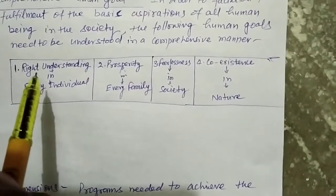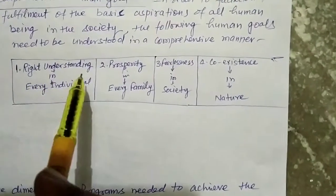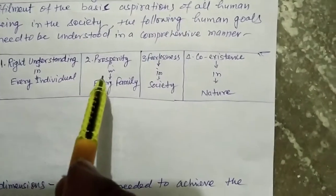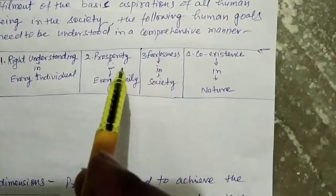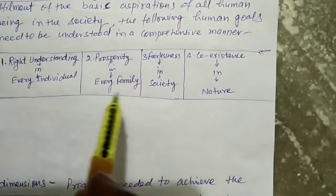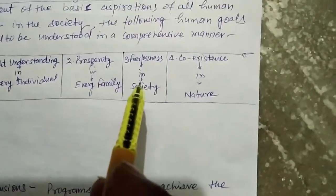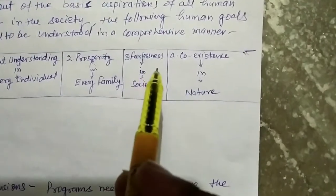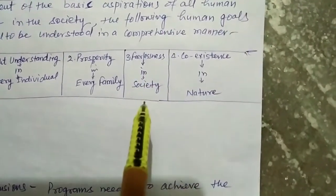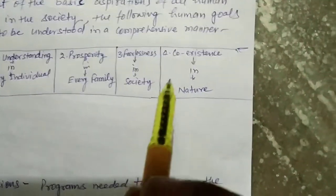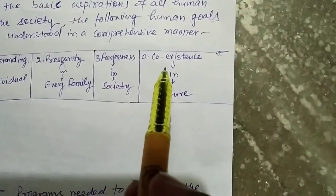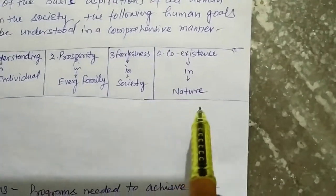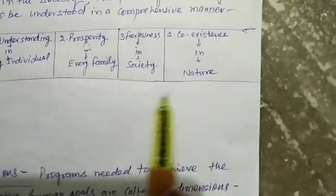Number one: right understanding in every individual. Number two: prosperity in every family. Number three: fearlessness in society. And number four: coexistence in nature.